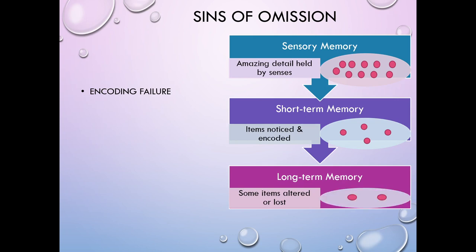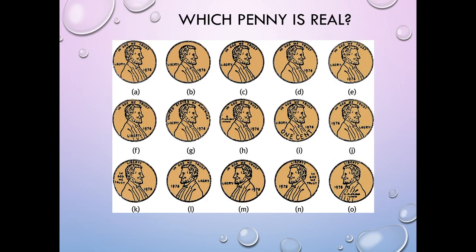The short-term memory store would contain those items that are noticed and then encoded into short-term memory. And so now that's going to be a smaller set of the information that was out in the world, right? Our long-term memory is going to contain those items that were paid attention to enough that they actually got moved from short-term memory into long-term memory. And so some items are going to get lost in that process. Some might get altered. So as we go through the stages of memory, if we're going to follow the Atkinson and Schifrin modal model of memory, by the time you get to long-term memory, there's just a small subset of all the things that had been out in the world, right?